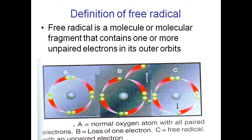So a free radical is a molecule or molecular fragment that contains one or more unpaired electrons in its outer orbit.